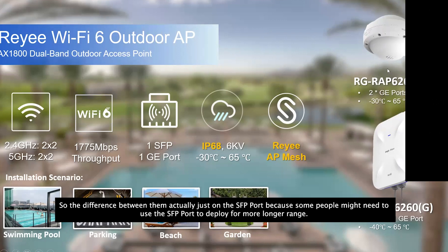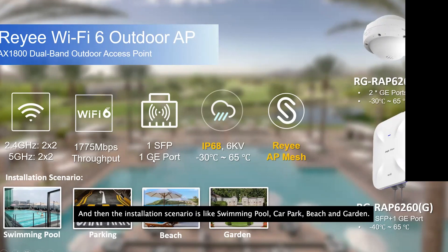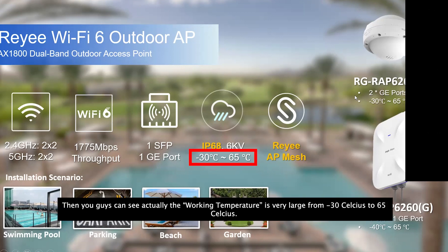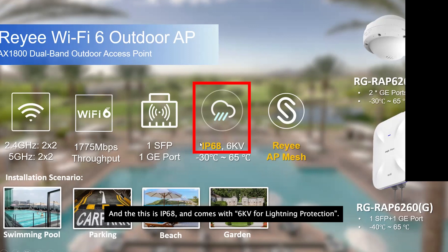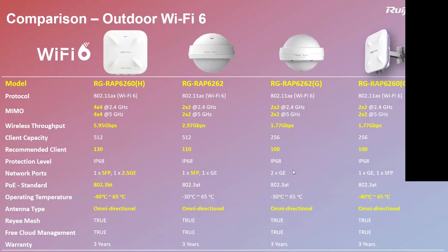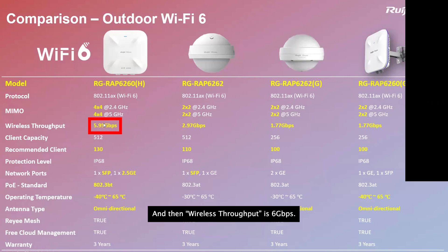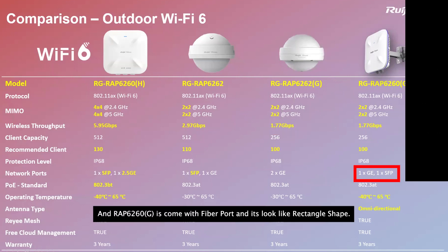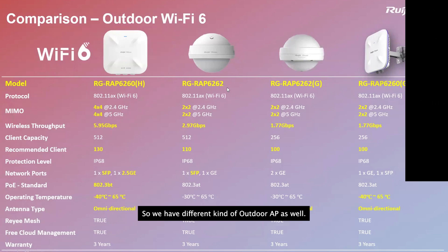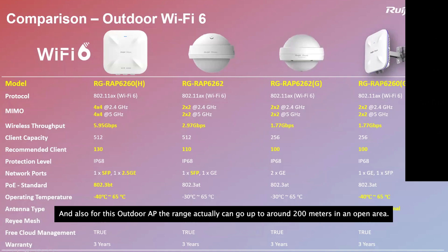Comparing the outdoor AP models: the 6262H is the highest-end with 6 Gbps, the 6262 is 3 Gbps, and the 6262G is 1800 Mbps. The 6262G comes with fiber ports. The outdoor APs have a coverage range of up to approximately 200 meters in open areas.